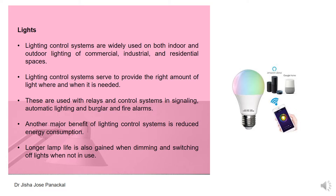These systems are used with relays and control systems in signaling, automatic lighting, and burglar and fire alarms — including traffic light signals. Another major benefit of lighting control systems is reduced energy consumption. Longer lamp life is also gained when dimming and switching off lights when not in use. These lights are available on the market and used as part of IoT (Internet of Things) systems, which can be controlled remotely or through a centralized mechanism.